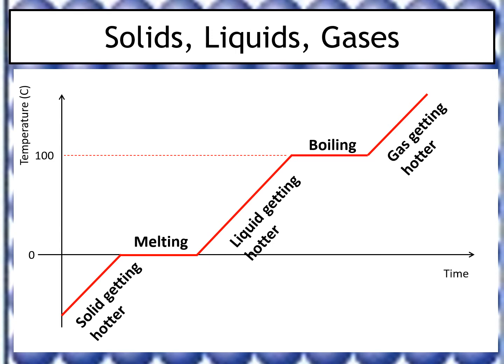Let's put these ideas together. Imagine you're in the lab with a beaker full of ice, heating it on a Bunsen burner, and recording the temperature every 30 seconds. When you plot your results you get a graph: starting below zero, the temperature rises as you heat the ice until it reaches 0°C — but then something different happens. The temperature stops rising and stays the same. What's going on?